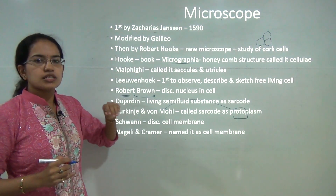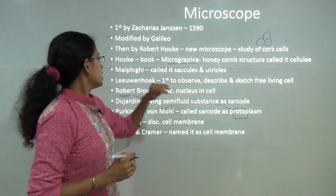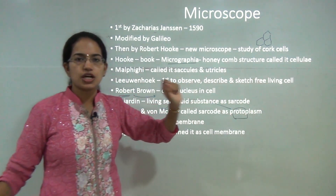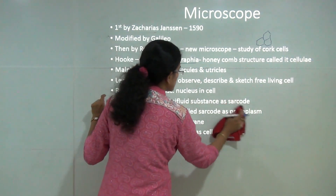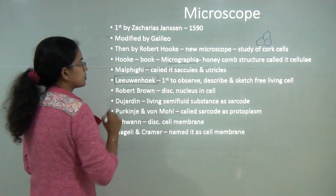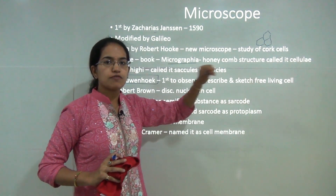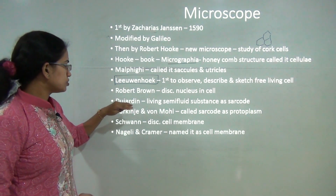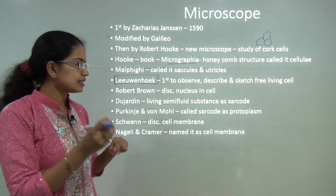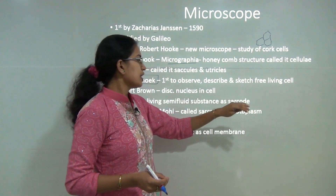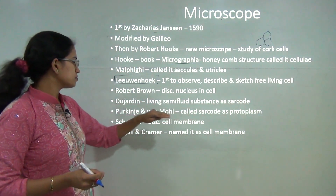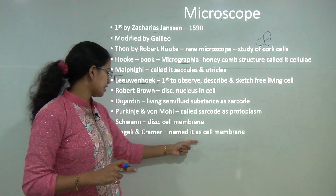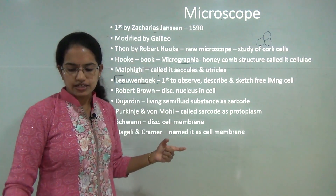Malpighi called the term cell as 'utricles' or 'saccules.' Leeuwenhoek is considered the first person to observe, describe, and sketch a free-living cell — this is important from an MCQ perspective. Brown discovered the nucleus. Dujardin described a semi-fluid material beyond the nucleus called sarcode, which was later called protoplasm by Purkinje and Von Mohl. Schwann discovered the cell membrane, and the name 'cell membrane' was later given by Nägeli and Kramer.